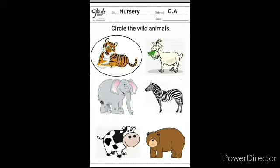Next animal is a goat. Goat is a farm animal, so we will not circle the picture. Look below the goat — which animal is this? This is a zebra. Zebra is a wild animal, so we will circle the picture.